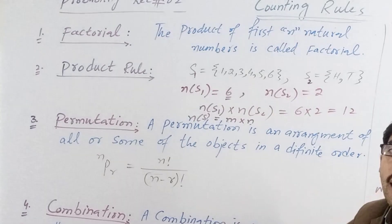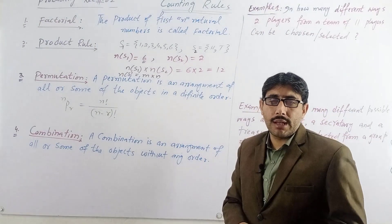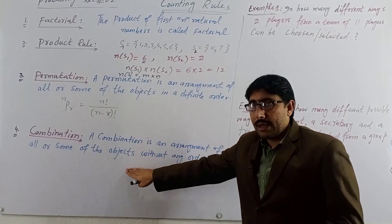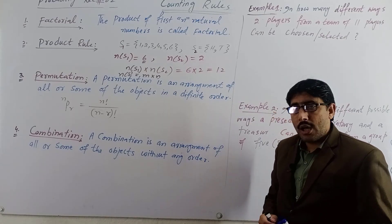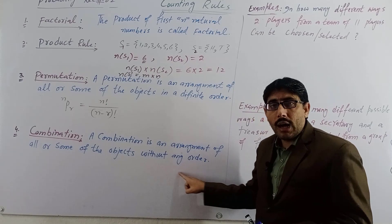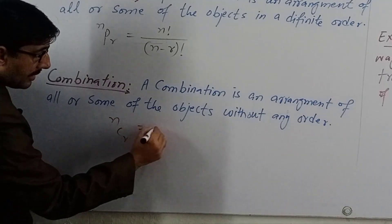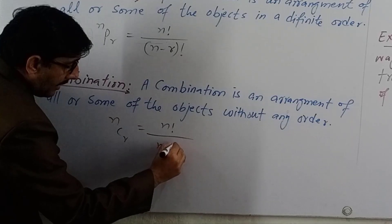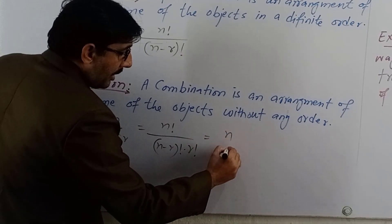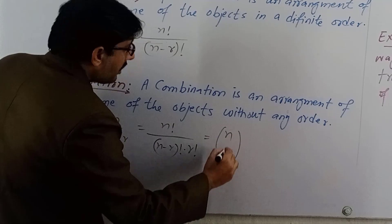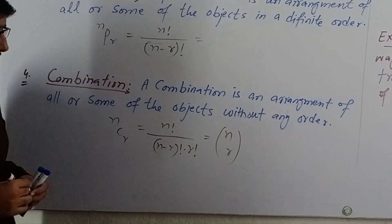In permutation, there is a specific order in which you must arrange the objects. If there is no specific order required and you just need to choose objects, then we use combination instead of permutation. A combination is an arrangement of all or some of the objects without any order. Its mathematical formula is nCr equals n factorial divided by (n minus r) factorial into r factorial.